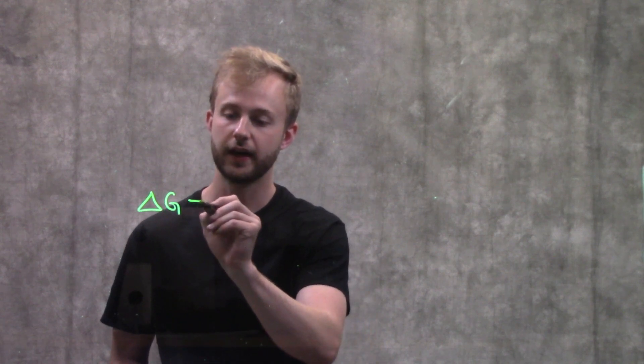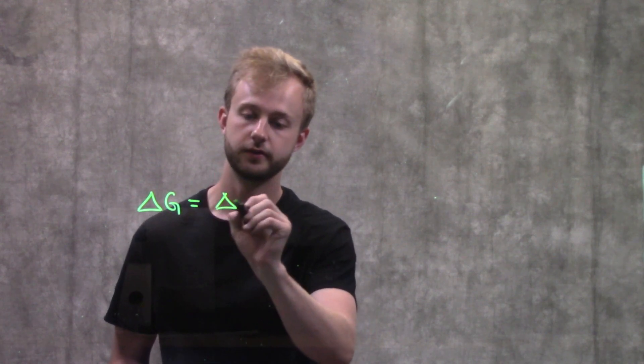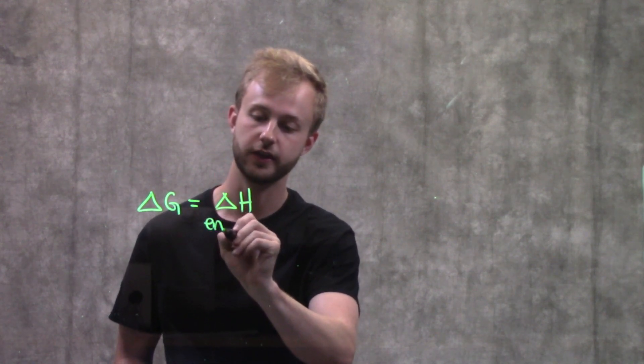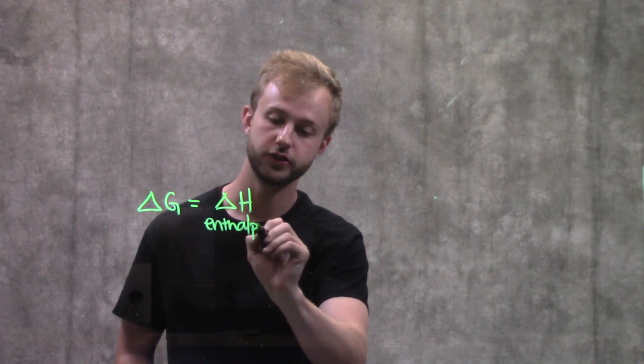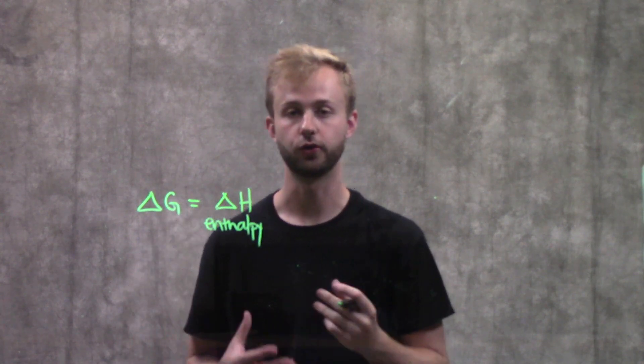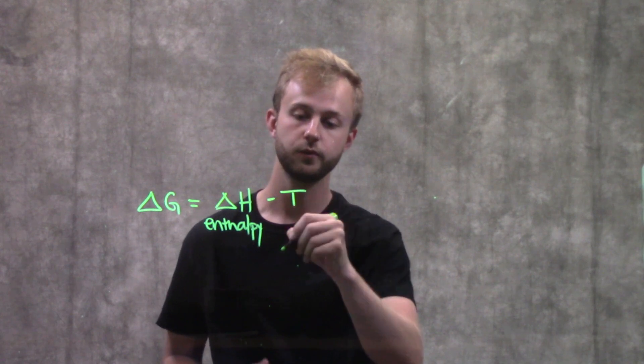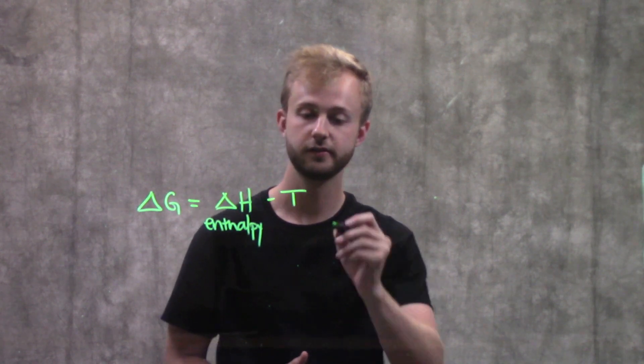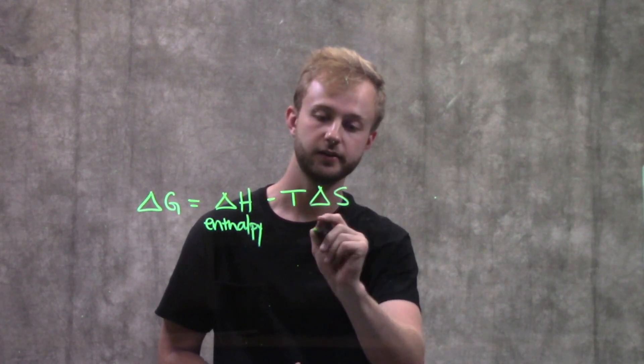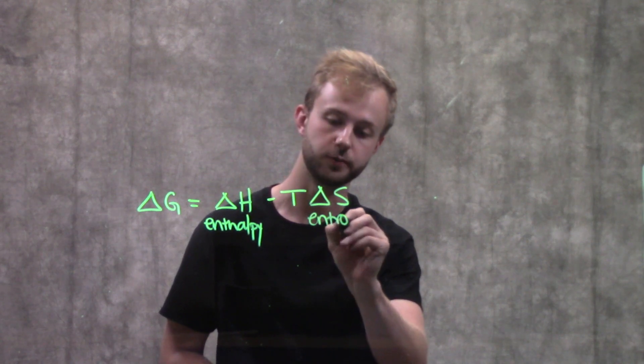And it's delta G, which means the change in free energy, because we can only measure the change. And so that is going to be equal to delta H, which is our change in enthalpy, which in biology is going to be equal to your total energy, minus T, which is our temperature in kelvins, times delta S, which is our change in entropy.